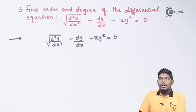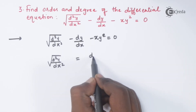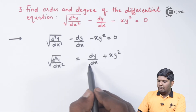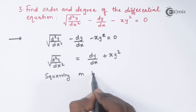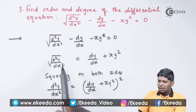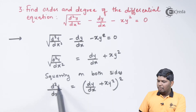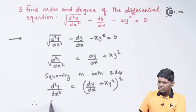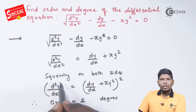To eliminate the square root, we need to square both sides. But if we directly square both sides, the left hand side will expand into a large (a + b + c)² form. So instead, we transfer the other two terms to the right hand side, giving √(d²y/dx²) = dy/dx + xy². Now squaring both sides, the square root is eliminated, yielding d²y/dx² = (dy/dx + xy²)². We now have no rational power, so the highest order derivative is 2 and its power — the degree — is 1.